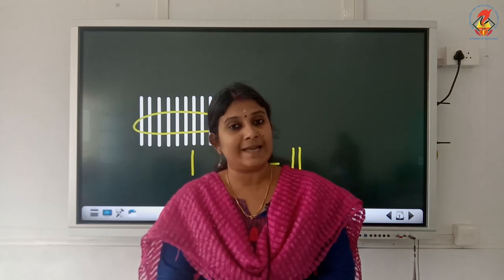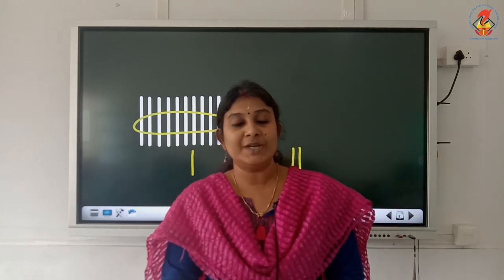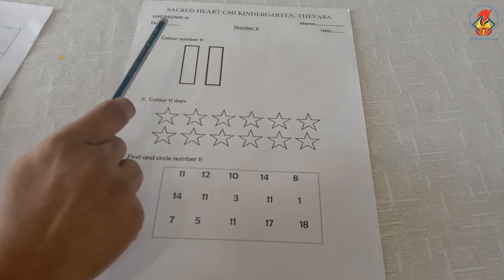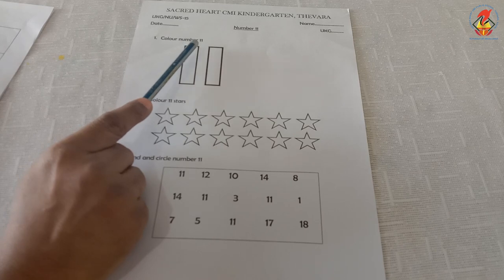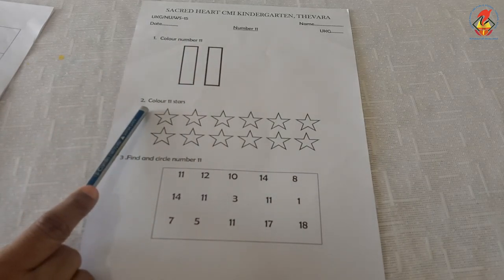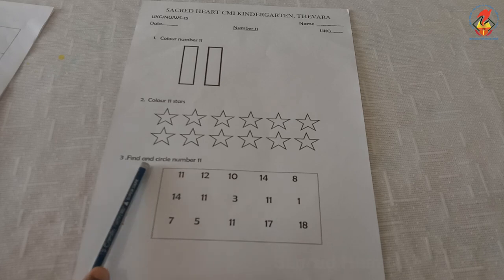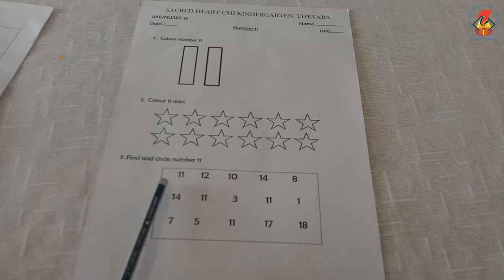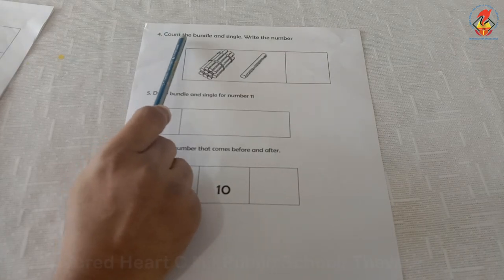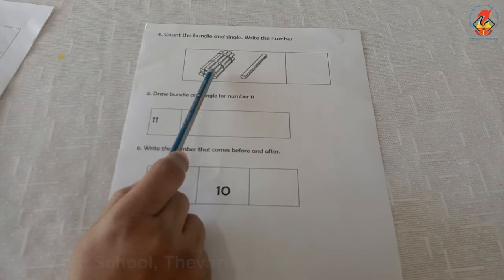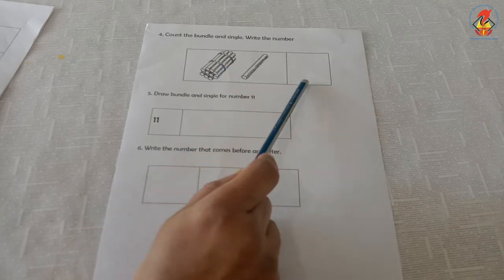Hope you all have understood. You have to practice to write number 11 at home. Now let us do the worksheet activities. There are 3 worksheets for number 11. This is the first worksheet, worksheet number 15. The first question is: color number 11. The second question is: color 11 stars. The third question is: color 11. The fourth question is: count the bundle and single, write the number. Here you can see bundle and single — count the bundle and single then write the number here.